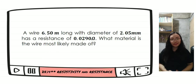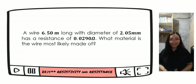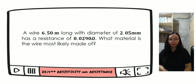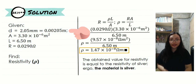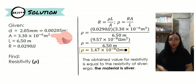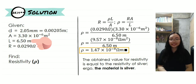We are now down to our last problem, and this one is from item 25.14, which deals with resistivity and resistance. This particular problem has an average difficulty. A wire, 6.50 meters long, with a diameter of 2.05 millimeters, has a resistance of 0.0290 ohm. What material is the wire most likely made of? We need to list all of the given: diameter equal to 2.05 millimeters, which upon conversion equals 0.00205 meters. Using this value, we obtain the area of the wire, equal to 3.30 times 10 to the negative 6 meters squared. We also have the length, equal to 6.50 meters, and the resistance, equal to 0.0290 ohm.